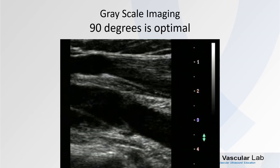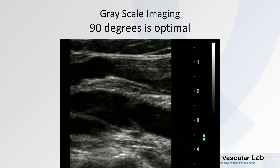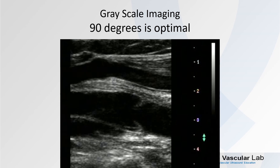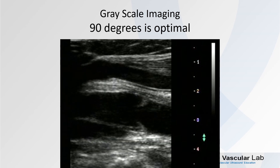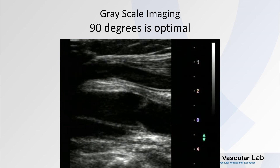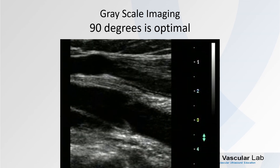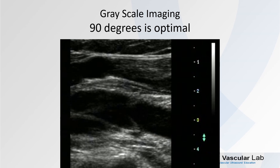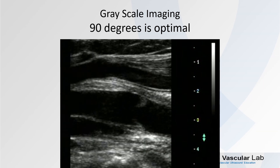Here's a pretty nice image of a popliteal vein, and we can see the valve in there. However, notice when I use the heel-toe maneuver and now strike that tissue at closer to 90 degrees, how my image improves. So remember, grayscale imaging — 90 degrees is optimal.